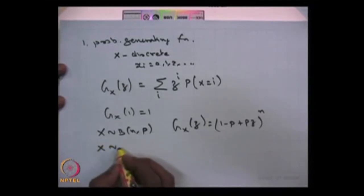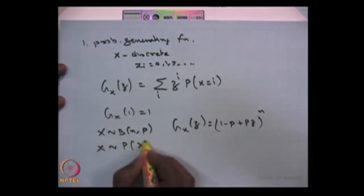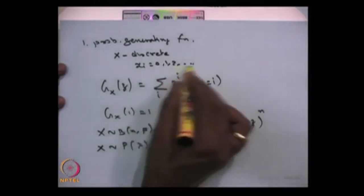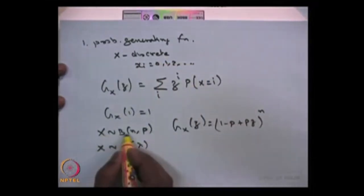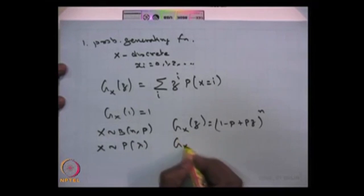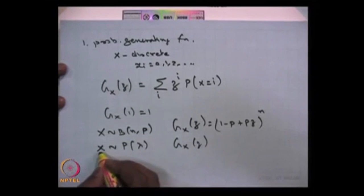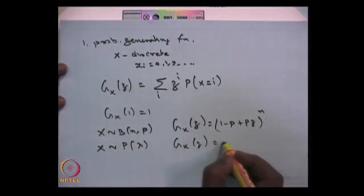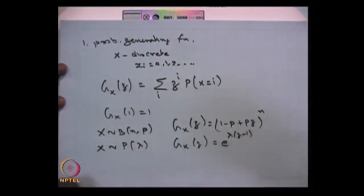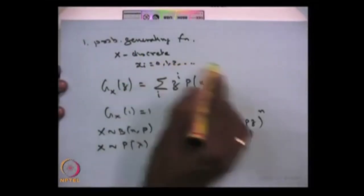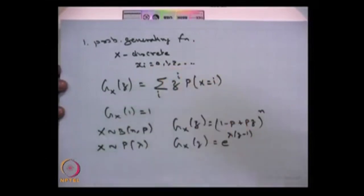If X is a Poisson distribution with parameter lambda, since this is also a discrete random variable with countably infinite possible values, you can find the probability generating function for random variable X, which is going to be e power lambda times (Z minus 1). So you can find a probability generating function only for a discrete type random variable whose possible values are countably finite or countably infinite, taking values 0, 1, 2 and so on.